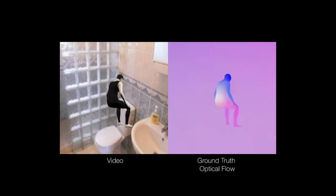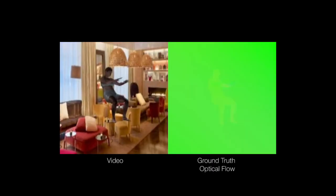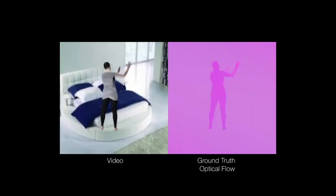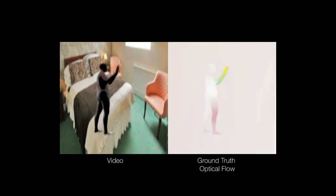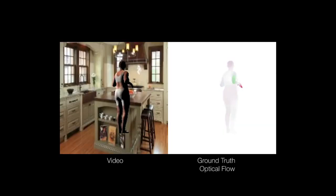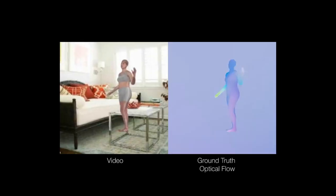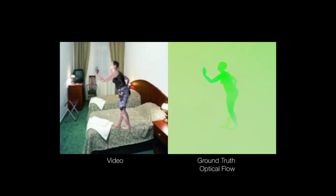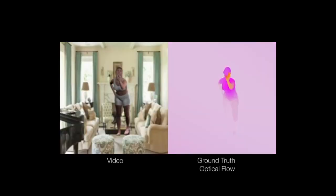Designing a method by hand is impractical, so we develop a new training database of image sequences with ground truth optical flow. For this, we use a detailed 3D model of the human body and motion capture data. Our dataset contains 130,000 training image pairs with ground truth optical flow and 10,000 test sequences.